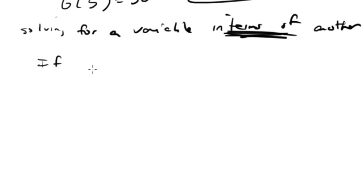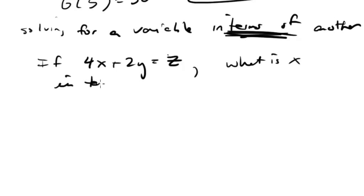So let's say they tell us that if 4x plus 2y equals z, what is x in terms of y and z? So what are they saying here? Well,